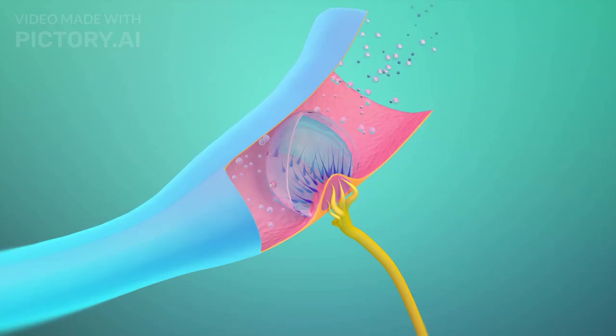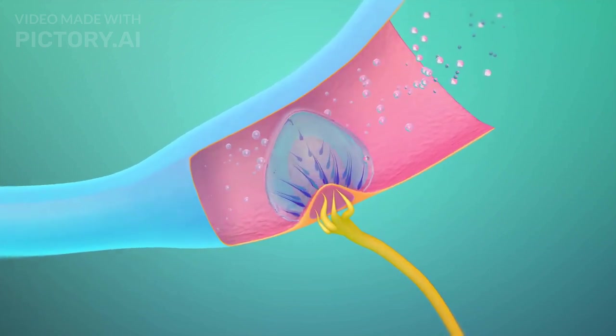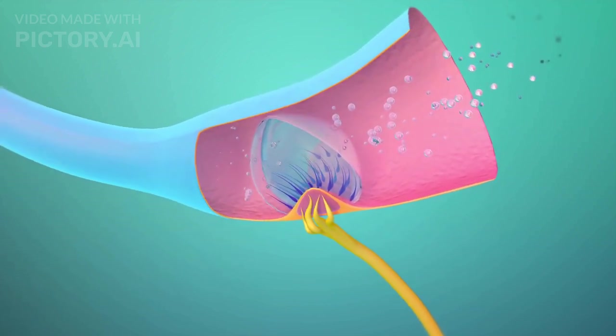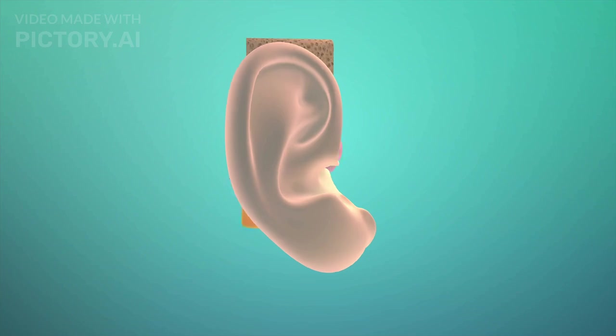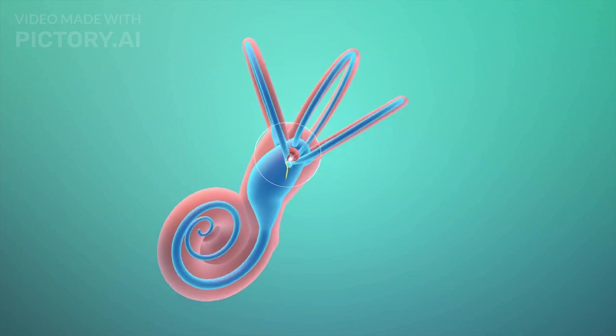The cochlea is lined with thousands of tiny hair cells that respond to specific sound frequencies. When the ossicles transmit vibrations to the cochlear fluid, it creates waves that bend the hair cells.